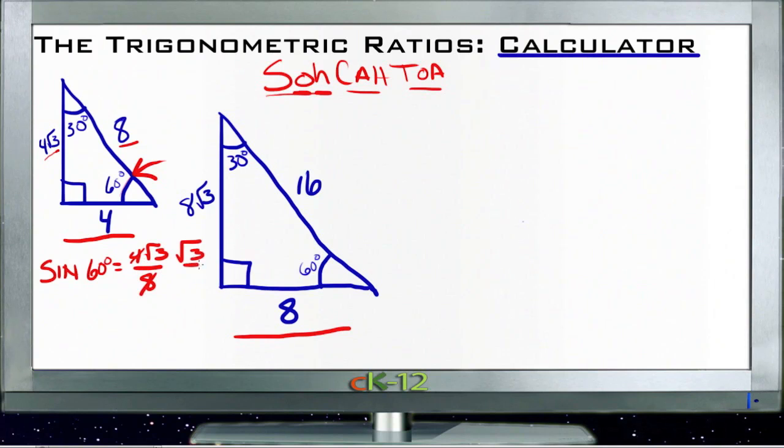If we do the same thing with this larger triangle over here, we have our 60-degree angle here on this triangle. Sine 60 degrees—our opposite over hypotenuse is 8√3 over 16. If we cancel 8 into 16, we end up with √3 over 2. So you can see I get the same value no matter what size triangle I'm dealing with, as long as I'm dealing with the same angle.